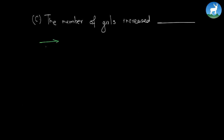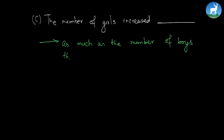Another question is: the number of girls increased — as much as the number of boys decreased, less than the decreased number of boys, or more than the number of boys that decreased? If you look at the graph and find the trend from 2011 to 2015, you find that the number of girls increased as much as the number of boys decreased. So the answer is 'as much as the number of boys that decreased.'